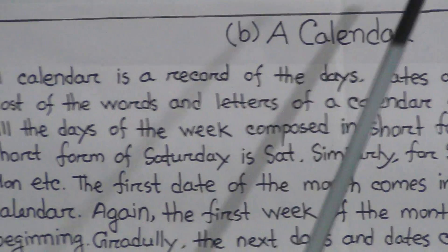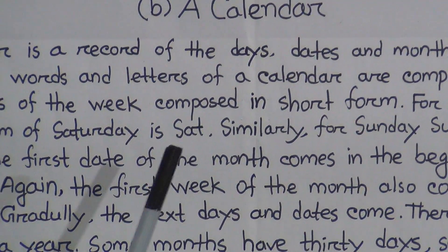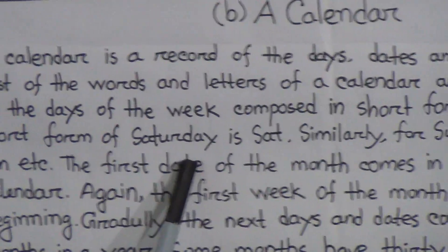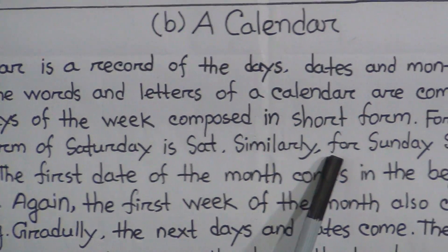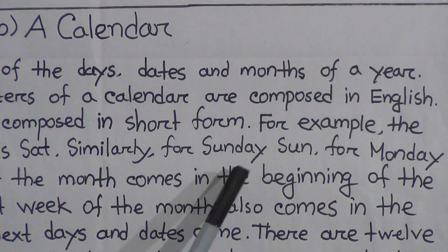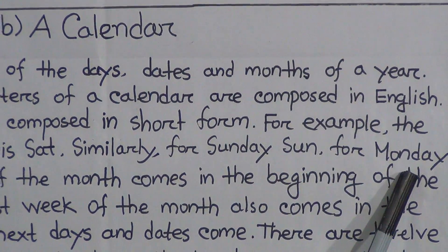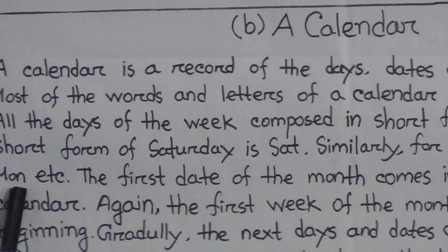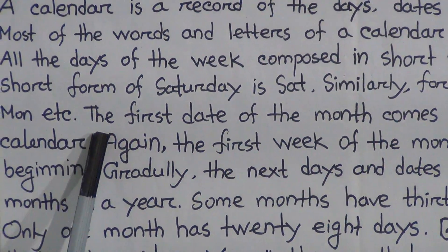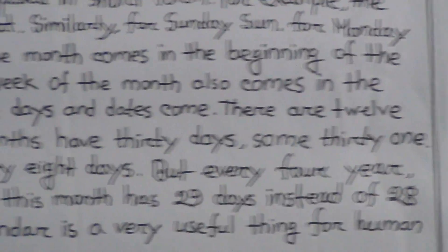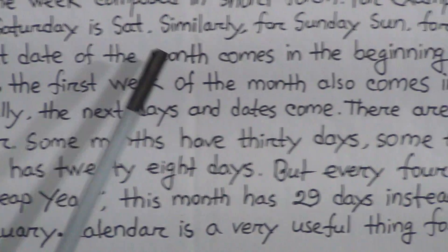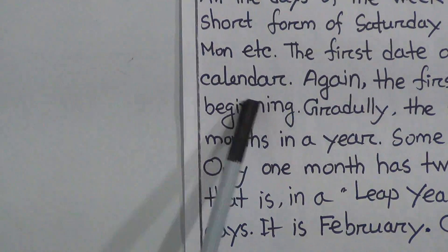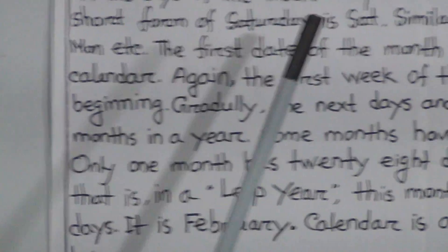In a calendar we see that the first date of the month comes in the beginning of the calendar. The first date of the month comes at the very beginning of the calendar — whichever day that first date falls on.